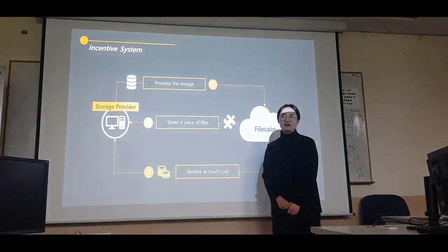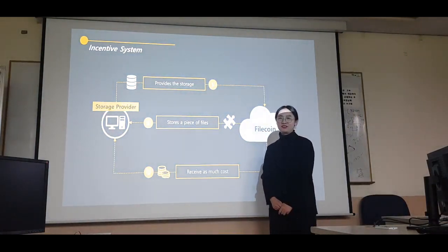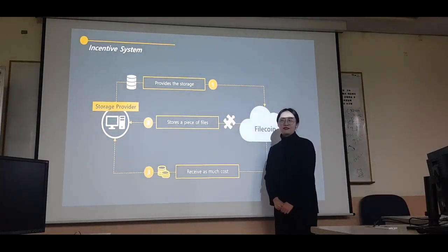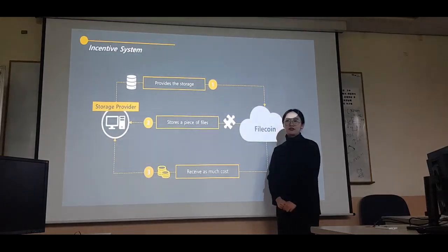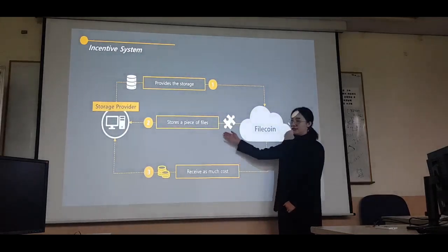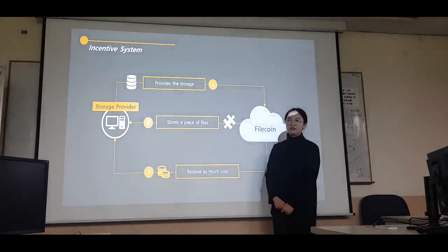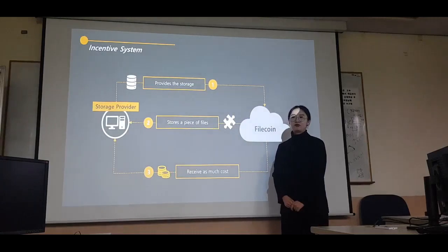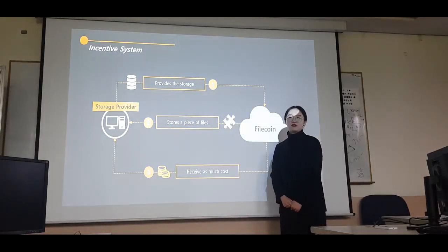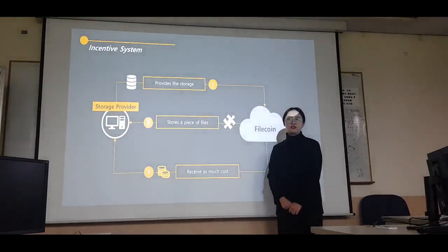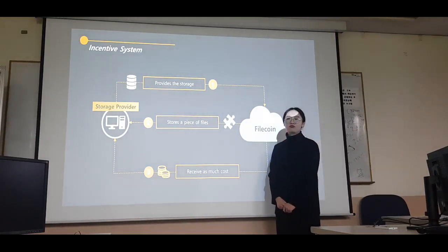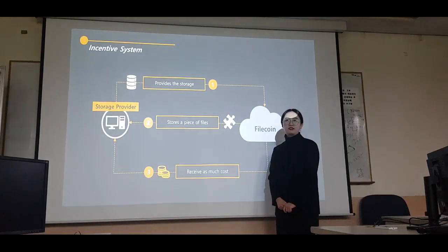Here is the structure of the compensation system. First, the storage provider participating in the network provides storage. Second, nodes that participate in the network store pieces of files in that repository. Third, the storage provider receives payment proportional to the amount of storage used by users in the network.